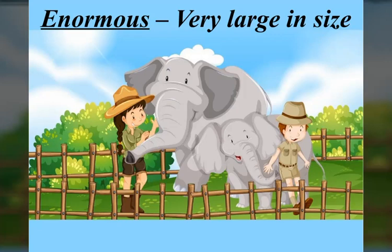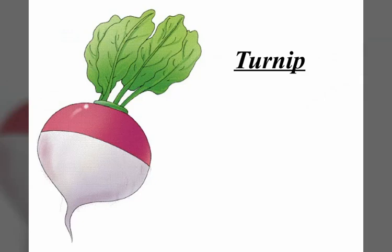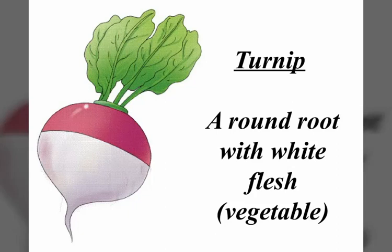Elephant is an enormous animal. Turnip — turnip is a round root with white flesh. It is a kind of vegetable. We had turnip today in dinner.